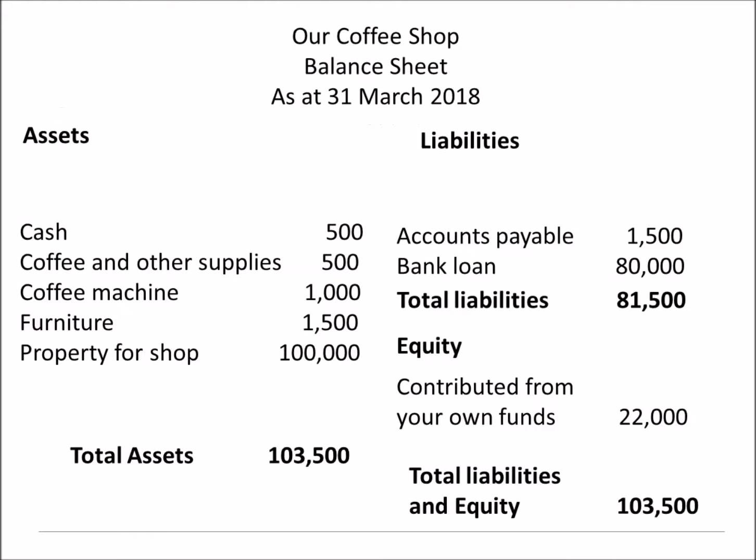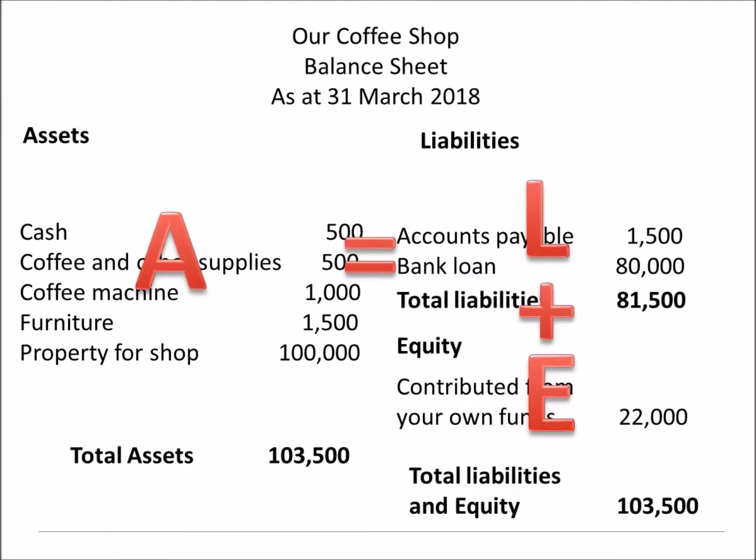In this context, debit and credit means nothing more than the left and right side of the T-account. Let's look at a balance sheet. We have assets on one side, which equals the total liabilities and equity on the other side. This reflects the accounting equation: assets equals liabilities plus equity.